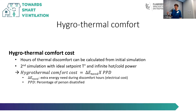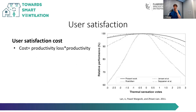Some examples: for hygrothermal comfort, it looks doable — you look at the difference in energy needs multiplied by the percentage of dissatisfied people between comfortable and uncomfortable conditions. For user satisfaction, we use work by Pavel Varkovsky, where productivity loss is related to thermal sensation — one of the examples we can use — and we translate it into a cost.